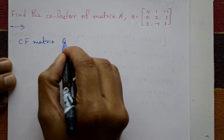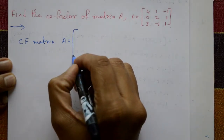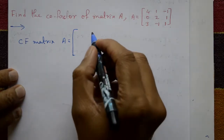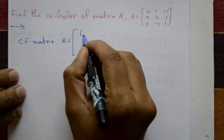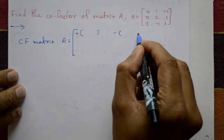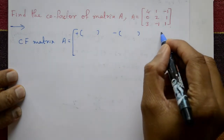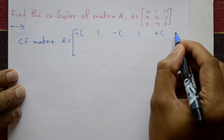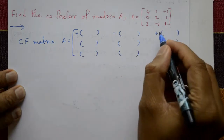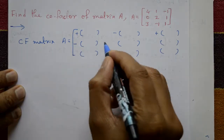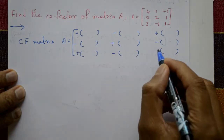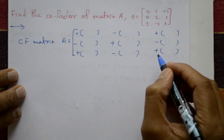Now A is equal to — I write it like this. The sign pattern is: plus, minus, plus for the first row; minus, plus, minus for the second row; plus, minus, plus for the third row.